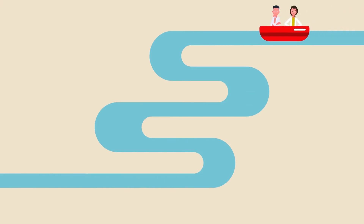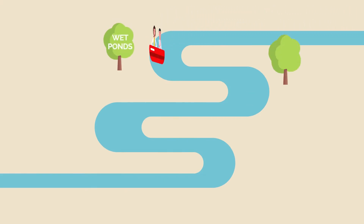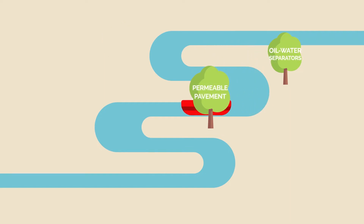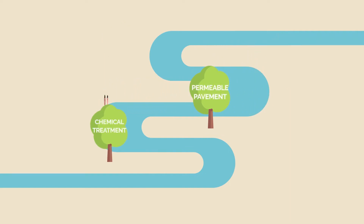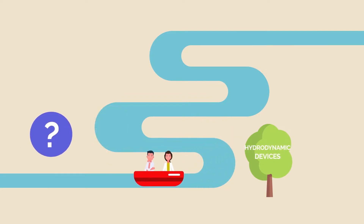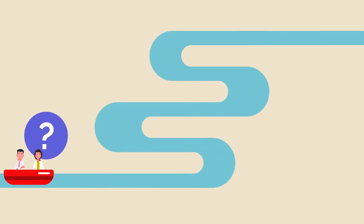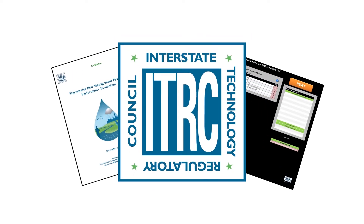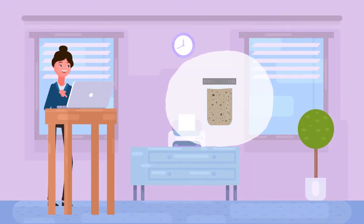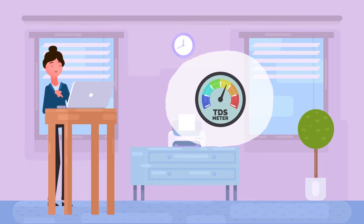This video will show you how to use the BMP screening tool to navigate the maze of stormwater management options and choose the best option for your site. You may know some options for management that might work, but have you ever wondered if there are more options than what you know? The ITRC has a guidance document and a tool to help. Using input from your own site, the screening tool helps you navigate to BMPs that may apply to your situation.